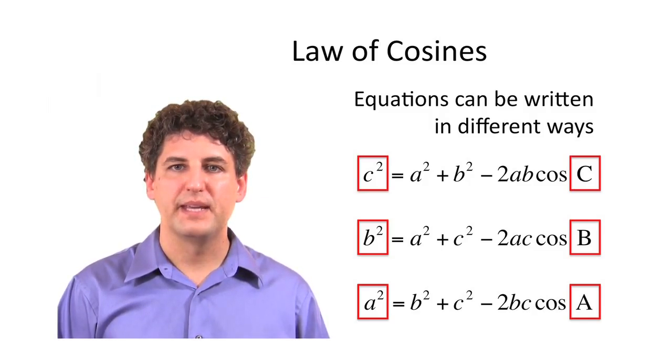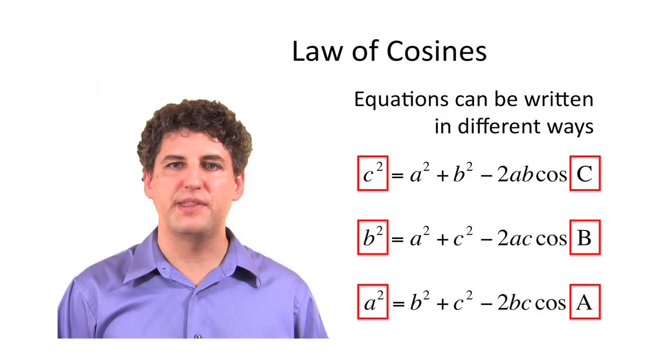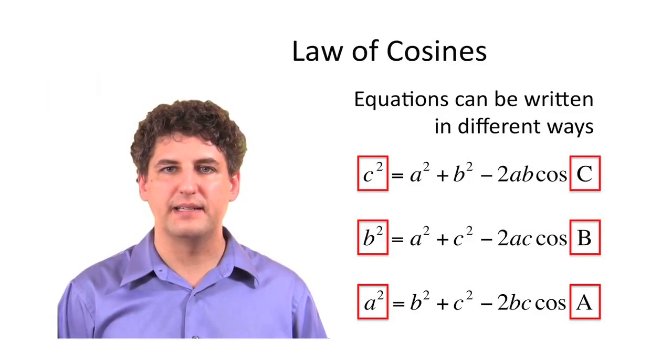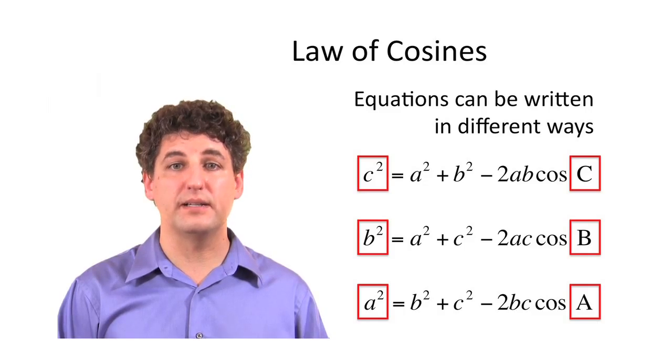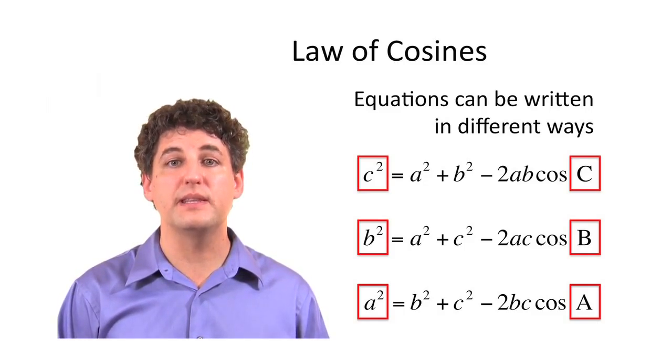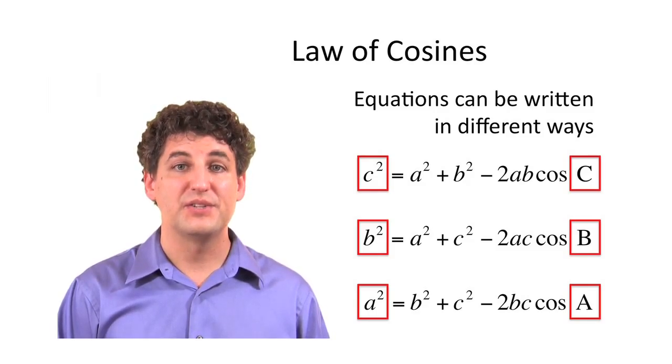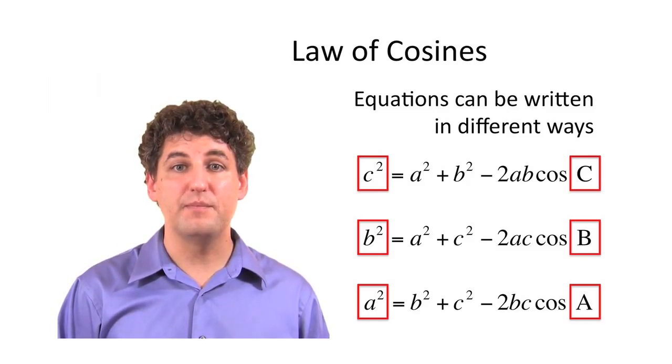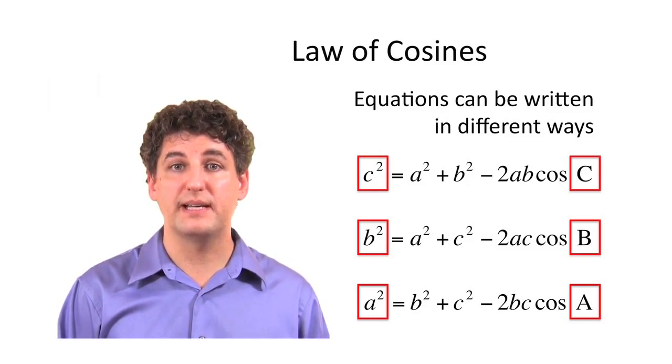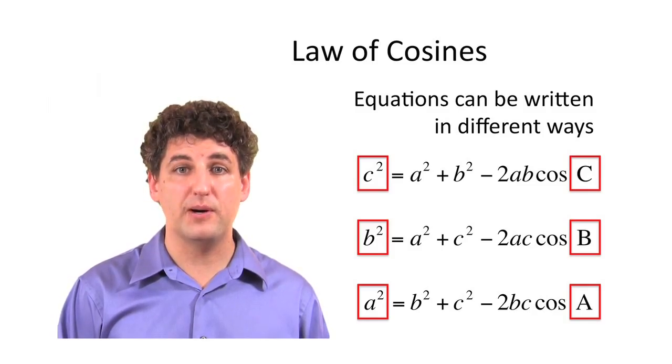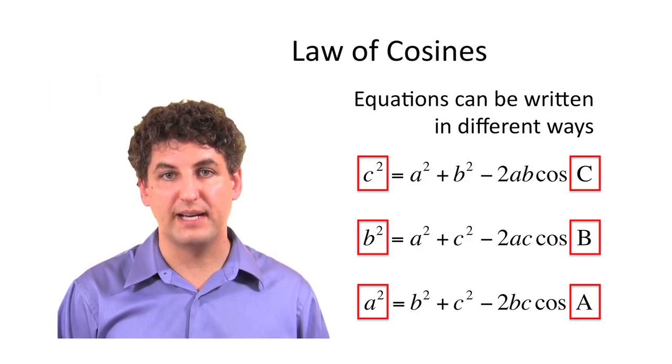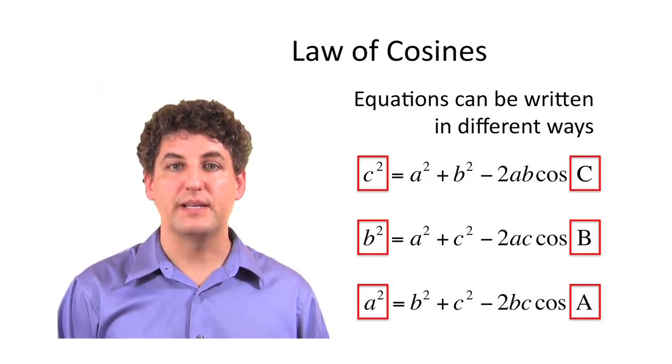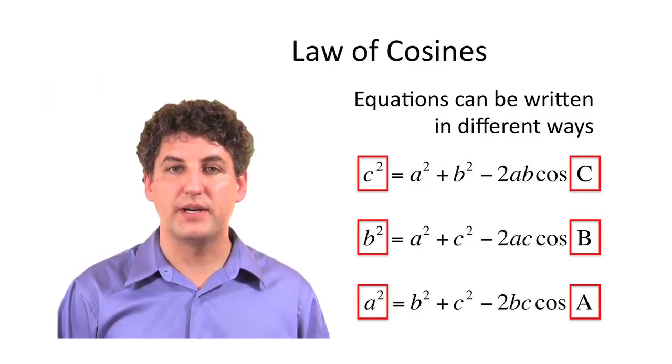Now the only part that's different is that you have this little extra thing that's been tagged on to the end. And if you recall, Pythagorean theorem was something that only dealt with right triangles, but the law of cosines can deal with any triangle, so that's kind of cool. The minus 2AB cosine angle C, that part kind of adjusts for triangles that don't have a right angle.